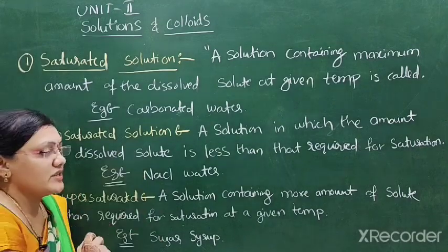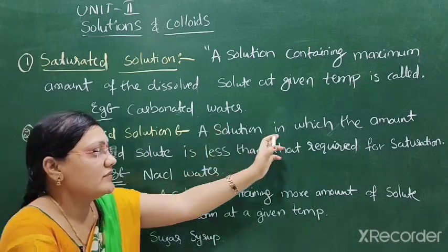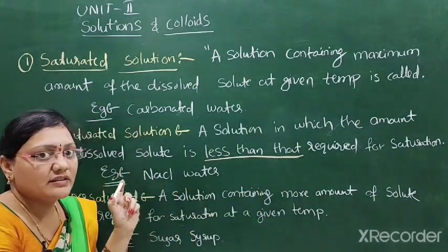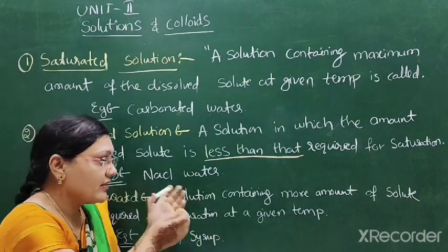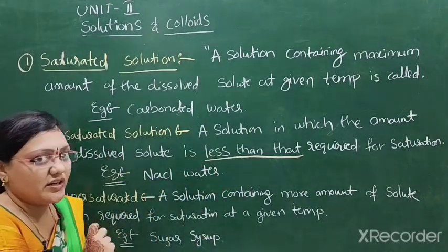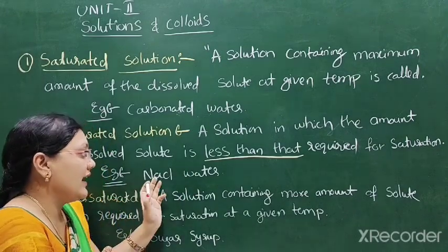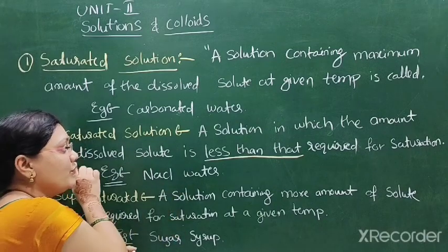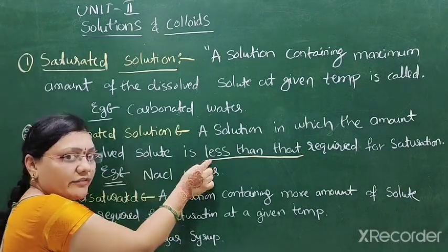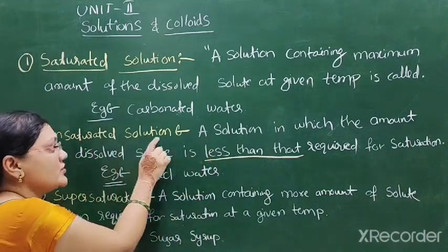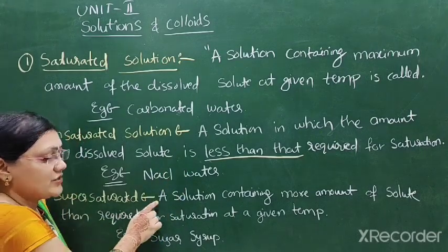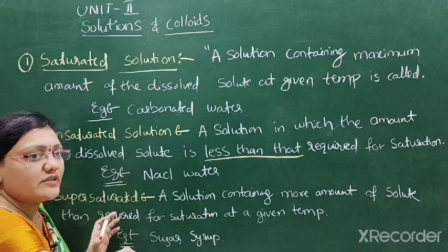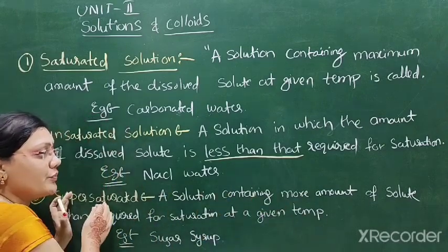An unsaturated solution is a solution in which the amount of dissolved solute is less than that required for saturation at a given temperature. Examples include salt in water and alcohol in water. A supersaturated solution contains more solute than required for saturation at a given temperature. For example, sugar syrup.